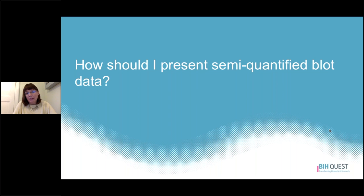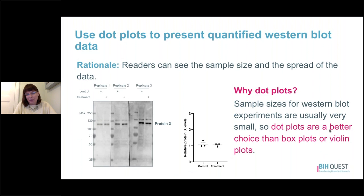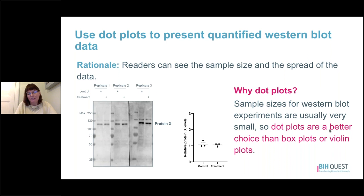Sometimes when working with western blots, we quantify the bands to present quantitative data. We recommend using dot plots to present quantified western blot data, because they allow readers to see the sample size and the spread or distribution of data points. Sample sizes for western blot experiments are typically very small, and as discussed in the video on inappropriate use of bar graphs, dot plots are the best choice for very small datasets — because summary statistics shown in box plots and violin plots are only meaningful when there is enough data to summarize.